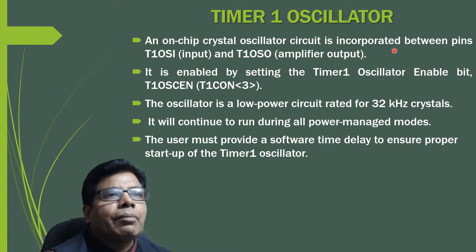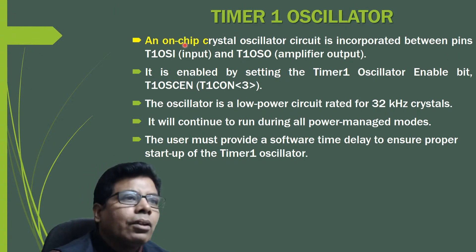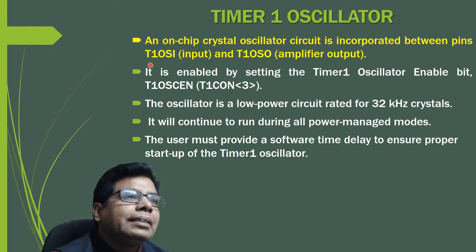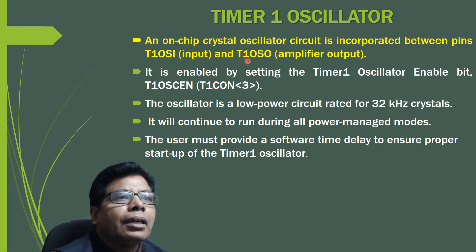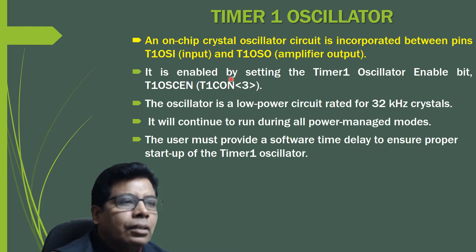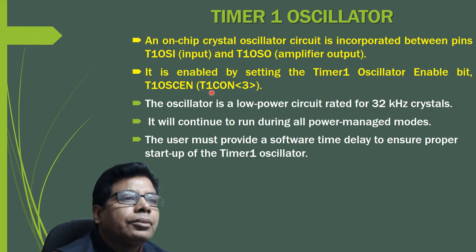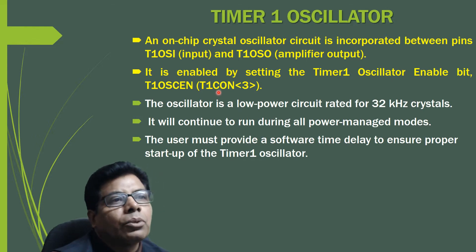Timer 1 has an on-chip crystal oscillator circuit connected between pins T1OSI (oscillator input) and T1OSO (amplifier output). It is enabled by setting the Timer 1 oscillator enable bit T1OSCEN, which is bit 3 in the T1CON register.